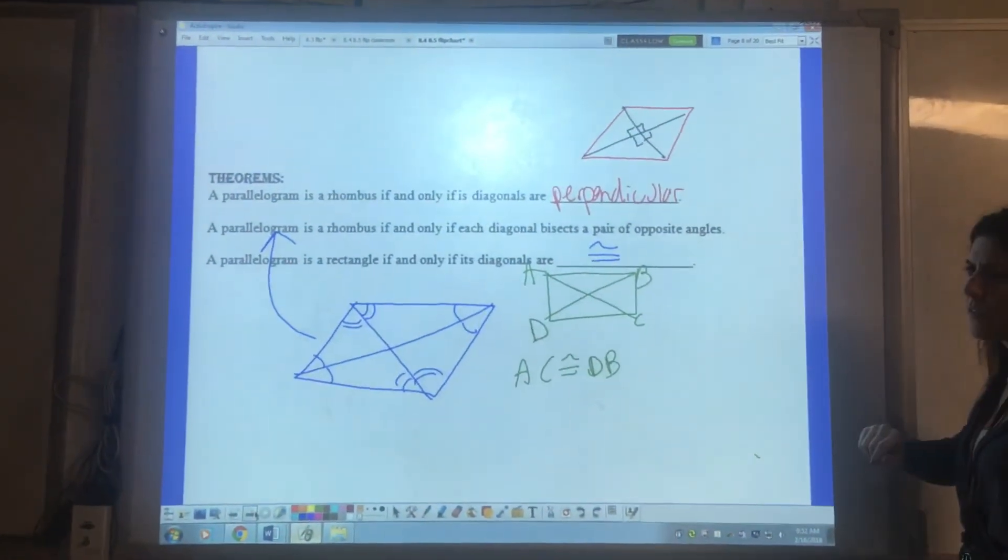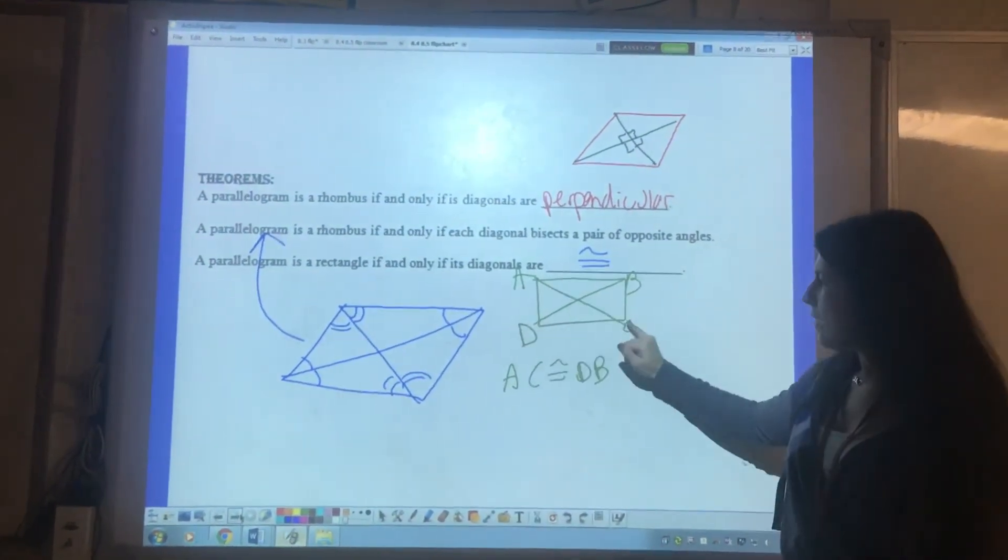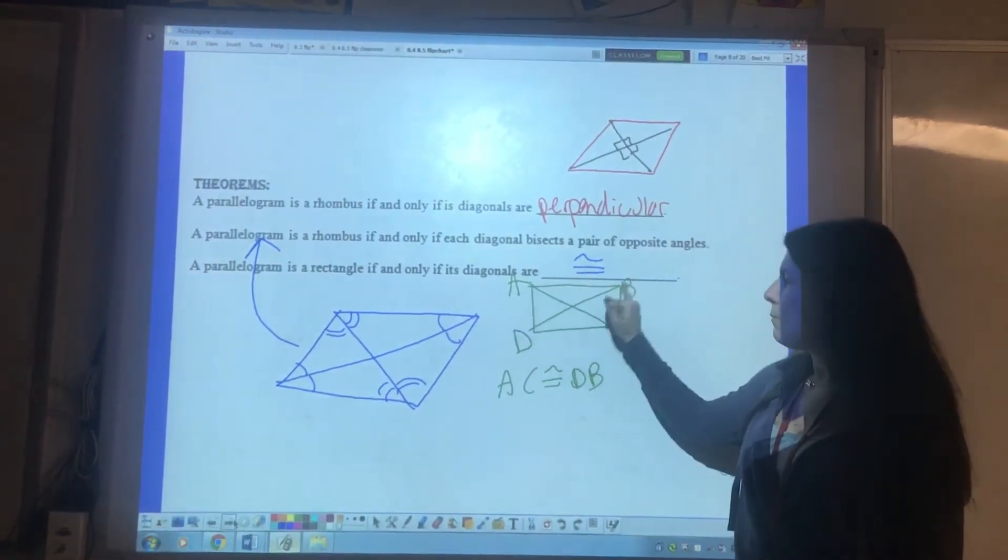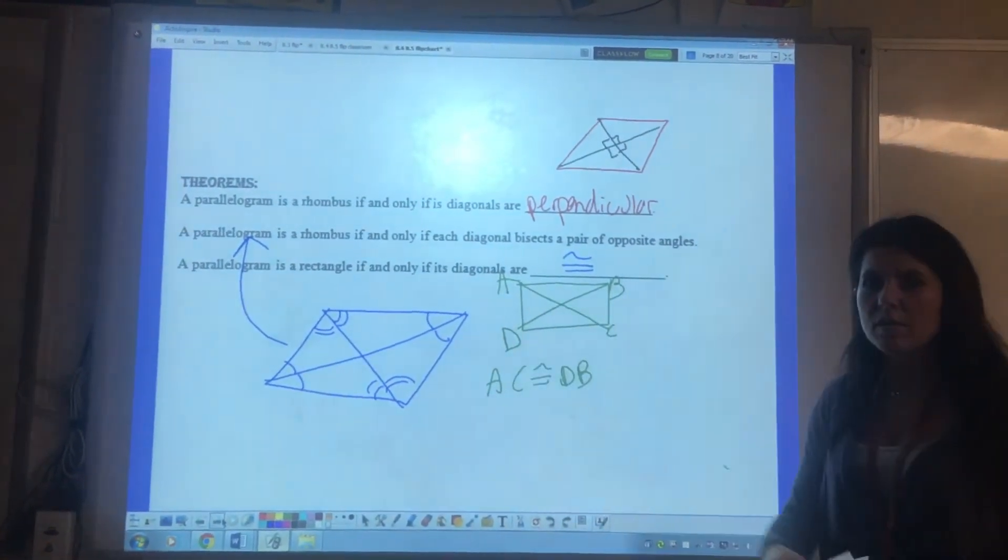It's a rectangle if the diagonals are congruent. Here's my rectangle. AC is a diagonal. BD is a diagonal. These two diagonal lines are the same length.